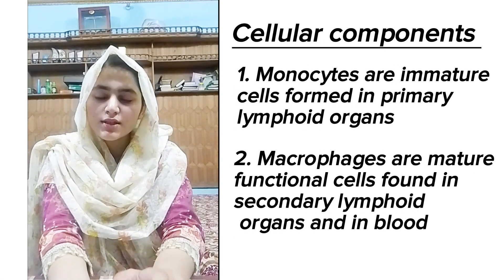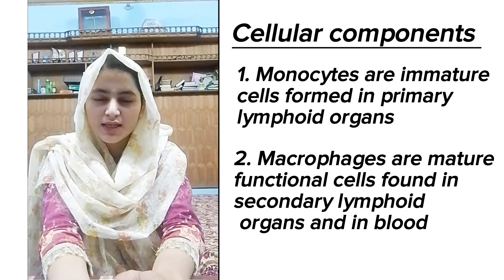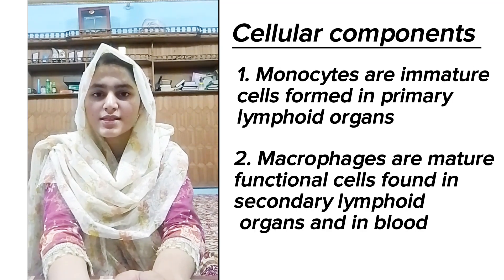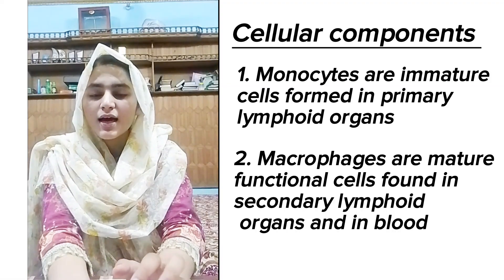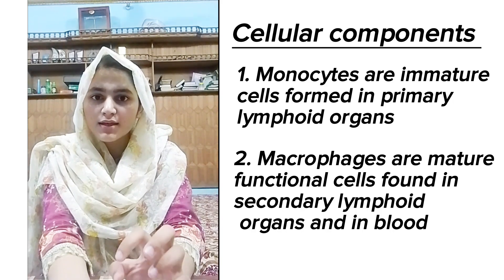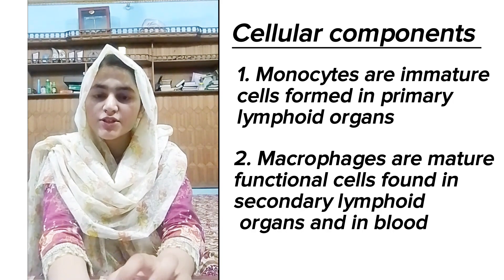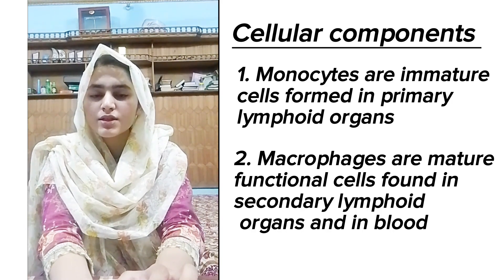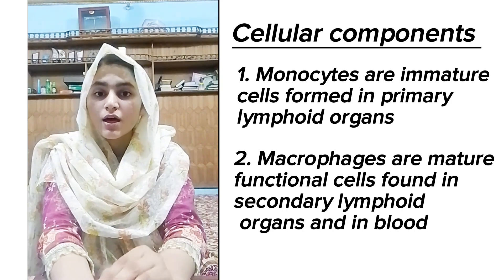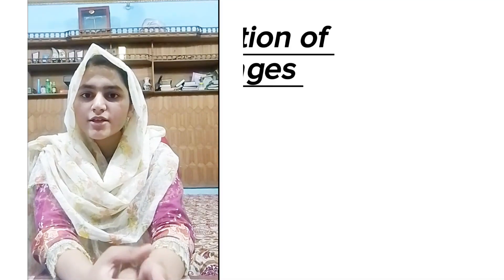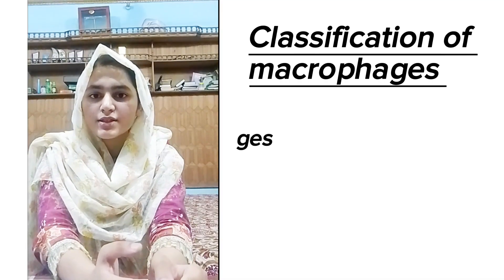Monocytes are the immature endothelial cells which are present in primary lymphoid organs, and macrophages are the mature functional endothelial cells which are present in the secondary lymphoid organs. So macrophages are basically the mature functional reticulo-endothelial cells.